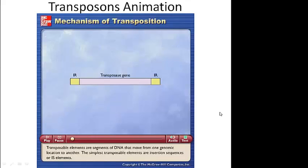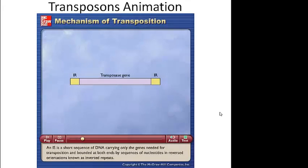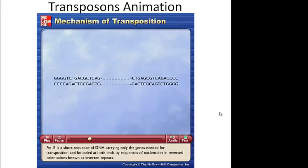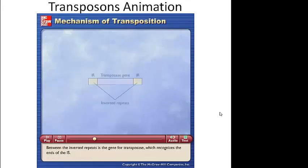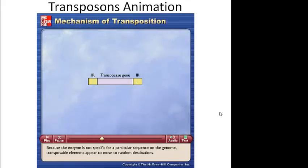Transposable elements are segments of DNA that move from one genomic location to another. The simplest transposable elements are insertion sequences, or IS elements. An IS is a short sequence of DNA carrying only the genes needed for transposition, bounded at both ends by sequences of nucleotides in reversed orientations known as inverted repeats. Between the inverted repeats is the gene for transposase, which recognizes the ends of the IS. Because the enzyme is not specific for a particular sequence on the genome, transposable elements appear to move to random destinations.